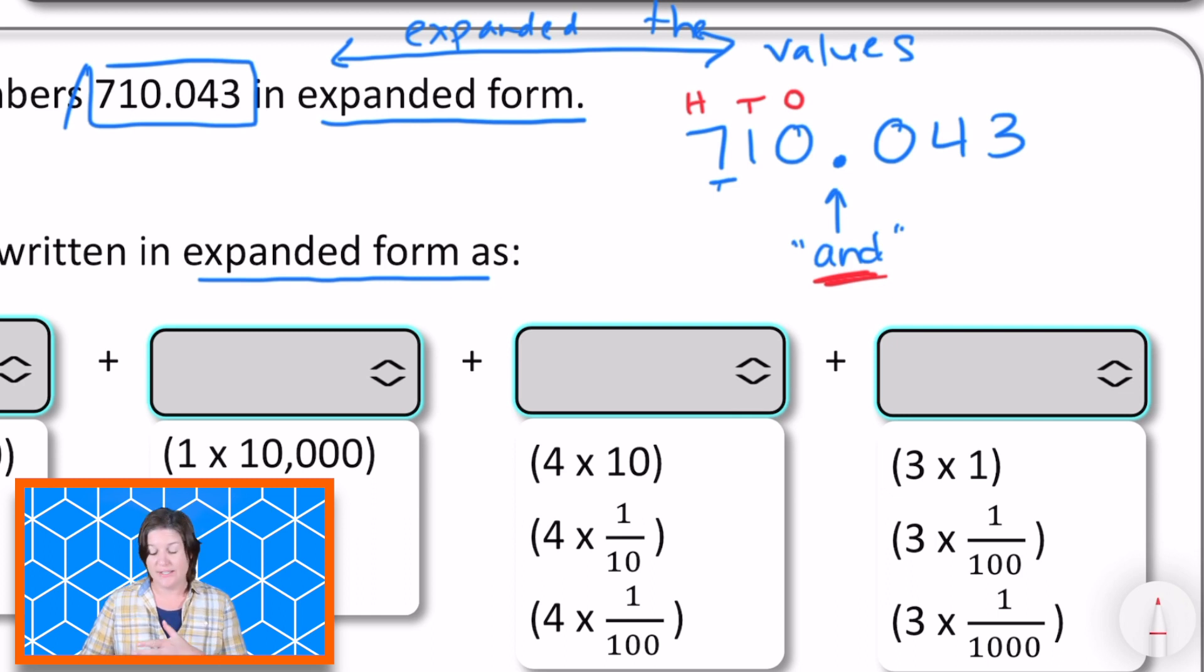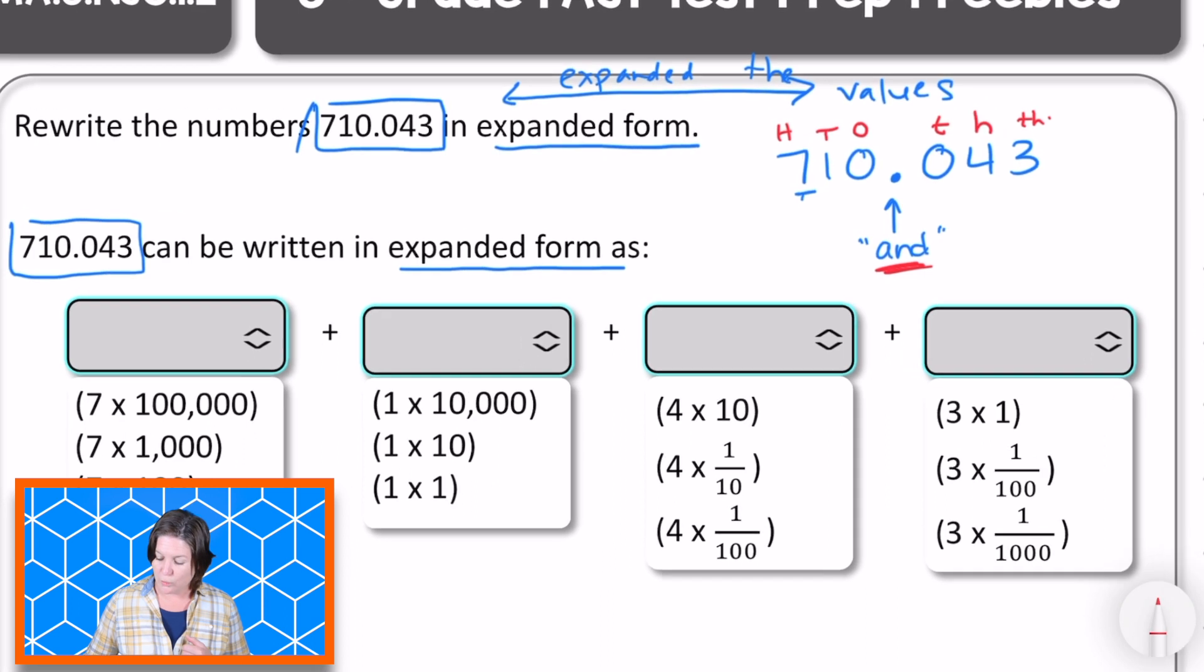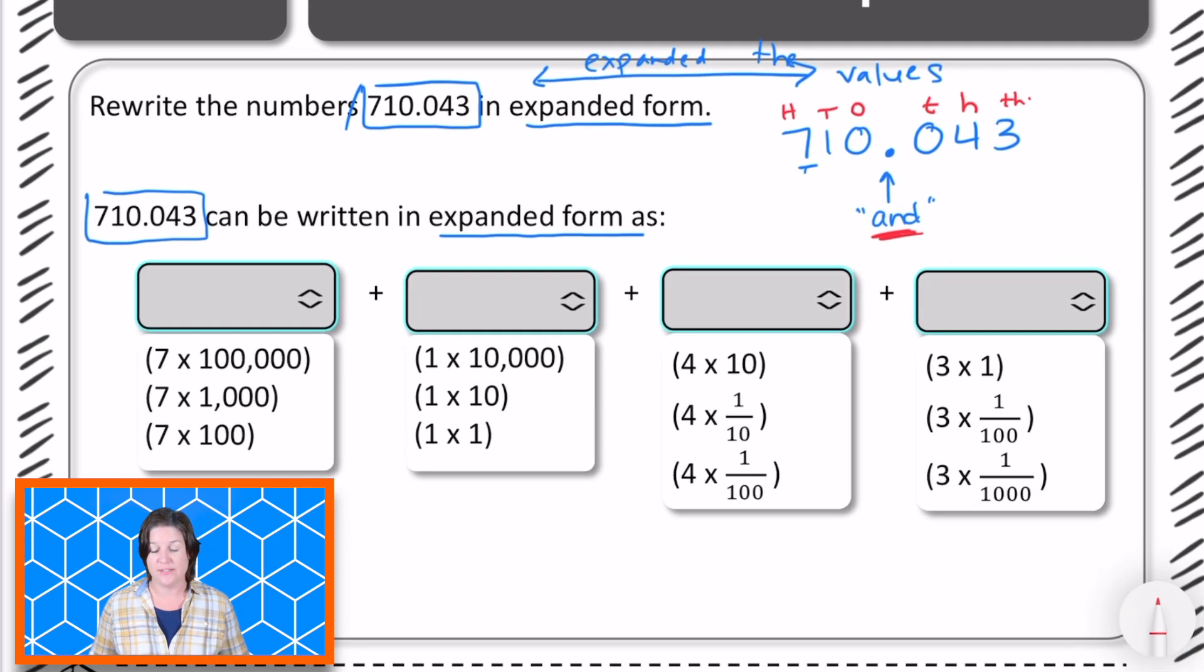So reading that we have seven hundred ten and now let's go over to this one. The zero is in the tenths place. The digit four is in the tenths place and that digit three is in what? The thousandths place right? Thousandths. So reading that number would look like this: seven hundred ten and forty three thousandths. That's how we would read it.